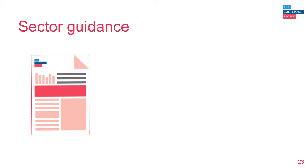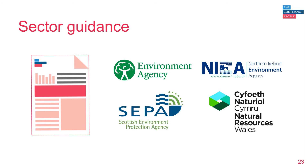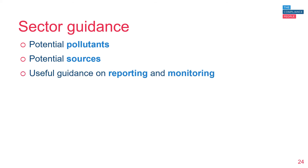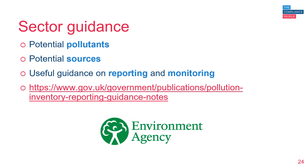A range of sector-specific guidance has been produced to help you complete EPRTR reporting and it's available on the appropriate regulator's website, depending on the jurisdiction you're in. It's worth a look as it sets out potential pollutants from each activity or sector, their potential sources, and provides useful guidance on reporting and how to monitor. The link on the slide is for the Environment Agency's reporting guidance notes and is a useful starting point if you're required to report.